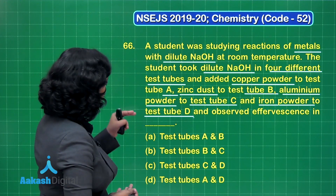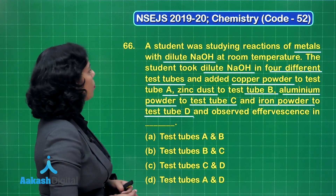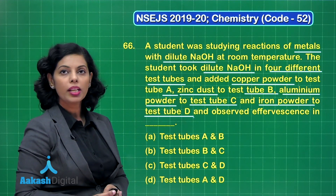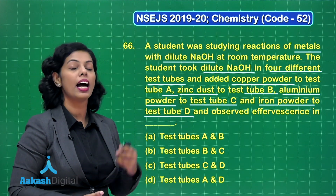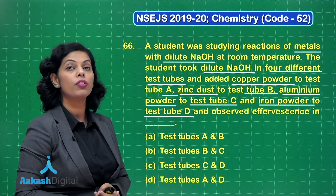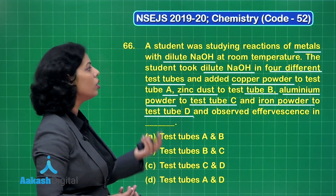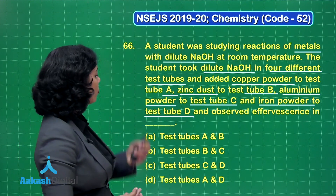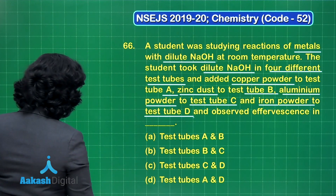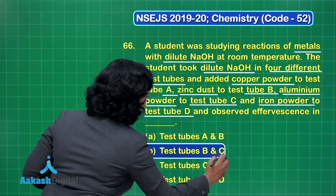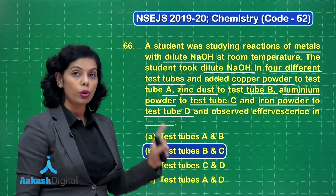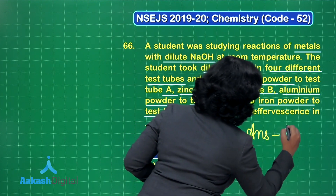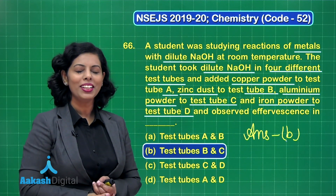Copper powder will not react with dilute NaOH. Zinc dust will react with NaOH and hydrogen is produced, resulting in effervescence. Similarly, aluminum powder will also show effervescence. However, iron powder will not give effervescence when reacted with NaOH. So the correct answer is option B — test tubes B and C consist of those metals producing effervescence with dilute NaOH.